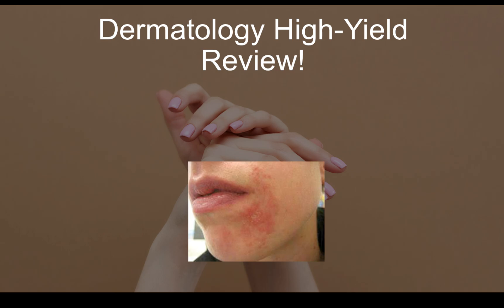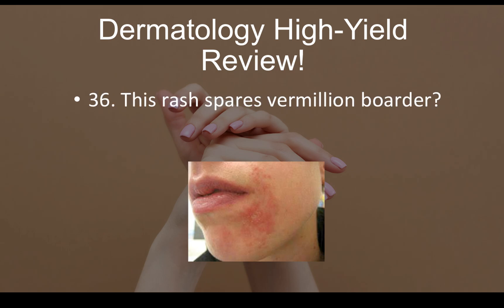Question number thirty-six: a rash that spares the vermilion borders should make you think of perioral dermatitis. If you see a rash sparing the vermilion borders in the stem or picture, think perioral dermatitis.